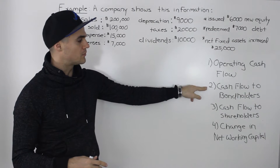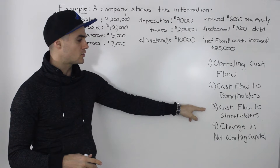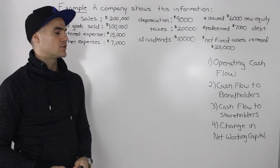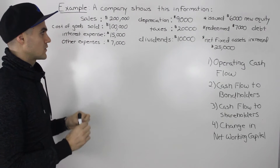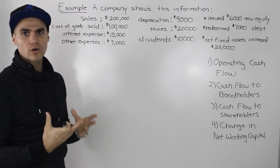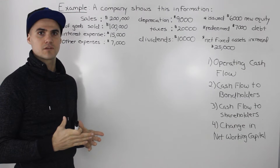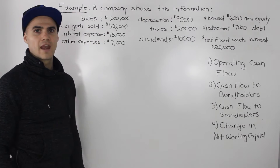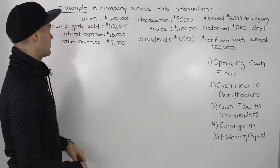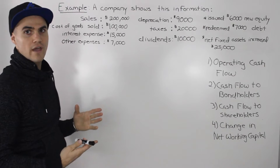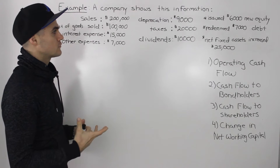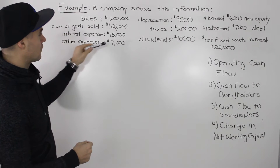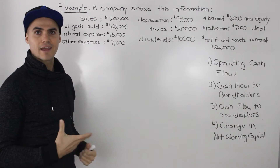The first thing you want to do when you run into an example like this, where you're just given a bunch of random information, is you want to try to organize it into financial statements — whether that's the income statement and/or the balance sheet. In this specific example, most of the information is part of an income statement. We don't have enough information to make a balance sheet, but stuff like sales and cost of goods sold — all these expenses — we can definitely make an income statement with.